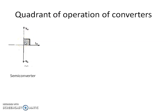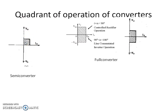If we employ a full converter, it gives both first quadrant operation and second quadrant operation. The quadrant of operation is defined in the output voltage and output current plane of a converter. If the output voltage and output current are both positive, the operation is known as rectification. If the output current is positive and output voltage is negative, that operation is known as inversion, and here the output power is negative.